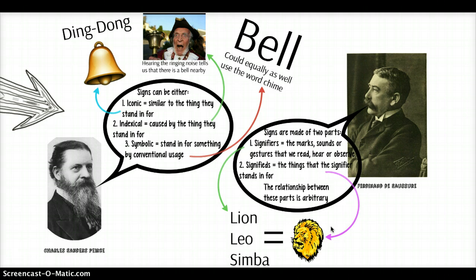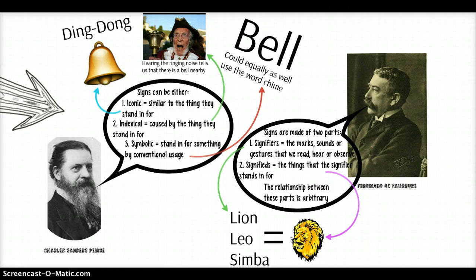It's not just that we could say 'sandwich' and mean 'bell,' or that we could say 'lion,' 'Leo,' or 'Simba' and mean the same thing. It's also arbitrary that we group particular objects into the same class. We have a specific class of objects we call 'lion,' and it excludes leopards — but it could include them. That's an arbitrary distinction we drew.